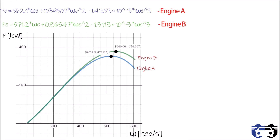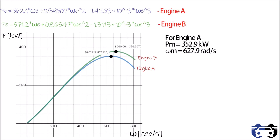From these curves you can compare the power of different engines at different angular velocities. For engine A, the maximum power is 352.9 kilowatts at omega m equals 627.9 radians per second. For engine B, the maximum power is 376.9 kilowatts at omega m equals 660 radians per second.